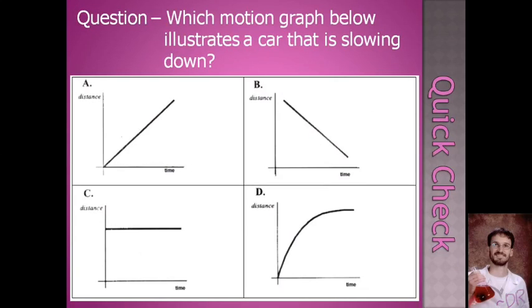Here we have four graphs that are options. Which one of these would best depict a car that is slowing down?